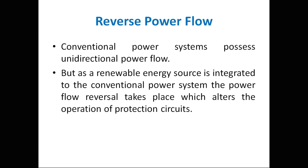Regarding reverse power flow: conventional power systems have unidirectional power flow — no customer sends power to the grid. But in a renewable energy power system, the consumer may give power to or take power from the grid, making it bidirectional. This alters the operation of protective circuits. For example, relays or circuit breakers must now be made bidirectional — protecting current flow from A to B or from B to A.